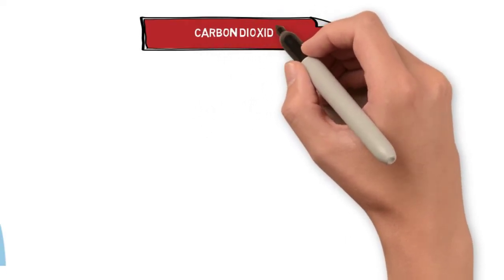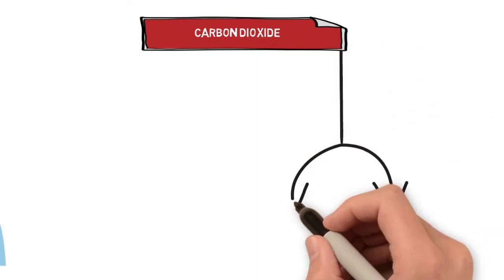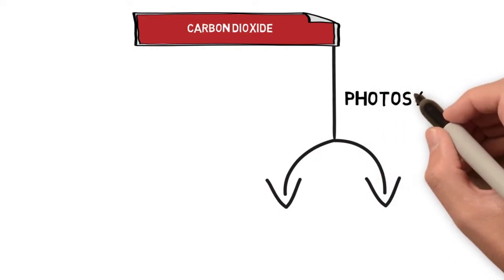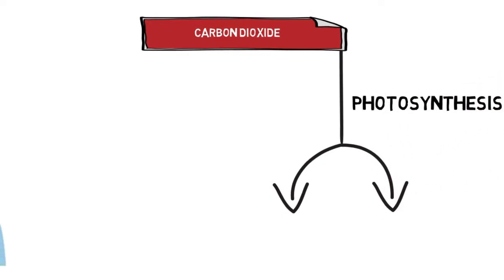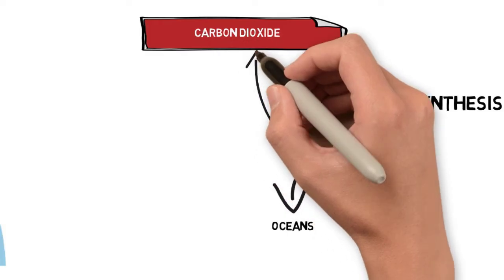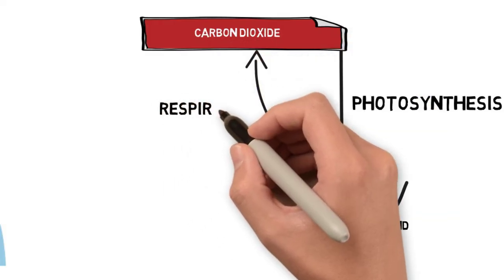So let's see if we can make a flow diagram of the carbon cycle. Most of our carbon comes from carbon dioxide in the atmosphere. It is removed from the atmosphere by a process known as photosynthesis. This can happen not only on land, but also in the oceans. All of those organisms that are photosynthesizing are also at the same time releasing carbon dioxide back to the atmosphere in the process known as respiration.